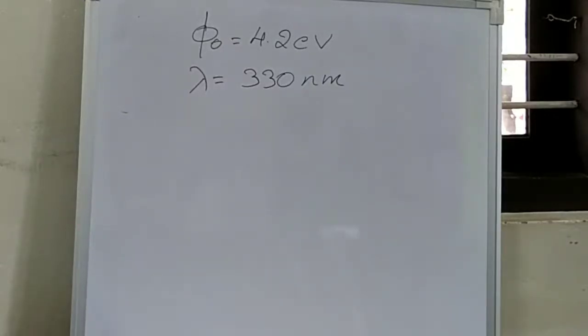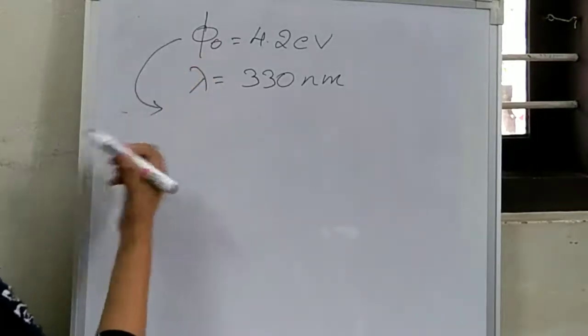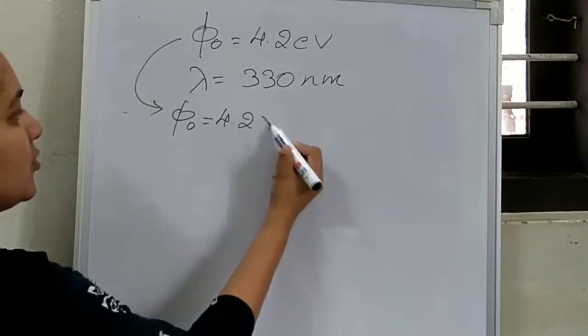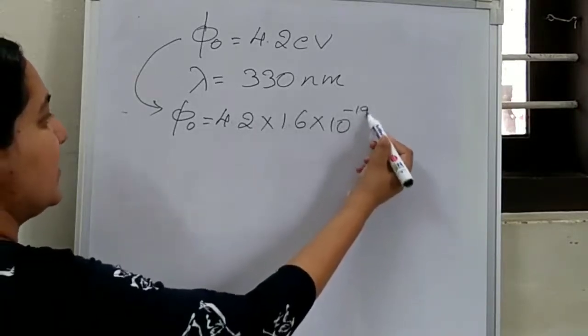We have to convert both into SI unit. Here φ₀ we can convert into SI unit. That is, the work function φ₀ is equal to 4.2 into 1.6 into 10 to the power of minus 19 joule.